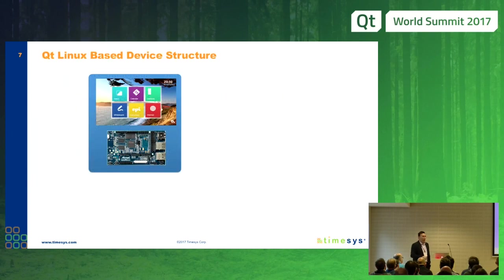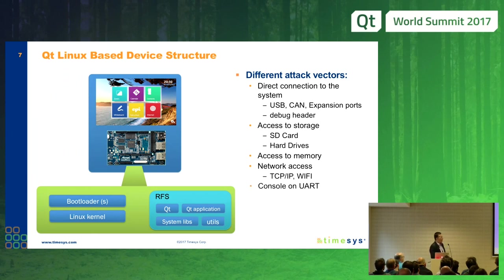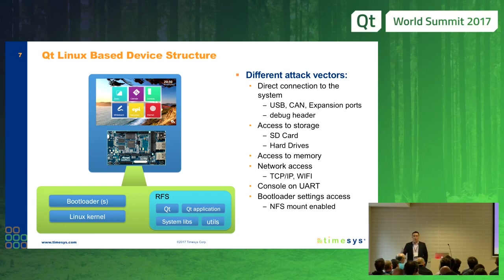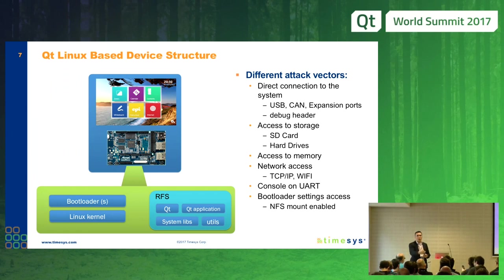Let's look at the Qt Linux-based device structure. We have a beautiful UI on an embedded device with a processor. On that device we have several software layers: a bootloader, a Linux kernel, and a file system where our Qt application lives together with Qt libraries and other system components. One of the big security issues I've seen repeatedly is having console access on UART left open in production devices. If someone can connect a serial port to a device and get root access on the console, that is a big security flaw.